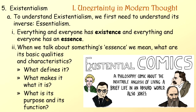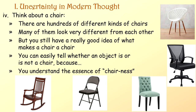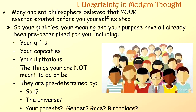To understand existentialism, we first need to understand its inverse: essentialism. Everything and everyone has existence, and everything and everyone has an essence. When we talk about something's essence, we mean what are its basic qualities and characteristics — what defines it, what makes it what it is, what is its purpose and function? Think about a chair. There are hundreds of different kinds of chairs, many of them looking very different from each other, but you still have a good idea of what makes a chair a chair. Many ancient philosophers believed that your essence existed before you yourself existed, so your qualities, meaning, and purpose have already been predetermined — including your gifts, your capacities, your limitations, the things you are not meant to do or be, predetermined by God, the universe, your parents, gender, race, or birthplace.